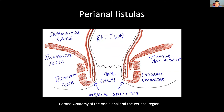First and foremost, the coronal anatomy of the anal canal and the perianal region is very important, specifically understanding the internal and external sphincters, the limits of the anal canal, and the inter-sphincteric spaces. In this coronal graphic, the rectum is at the top, with the dentate line below it and the anal canal beneath that. On both sides, the dark red line is the internal sphincter bilaterally, which is a continuation of the circular smooth muscle of the rectum. It's involuntary and contracted at rest, relaxing during defecation.